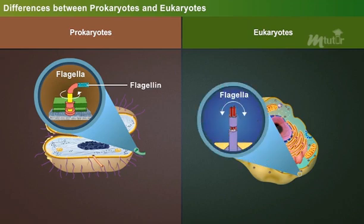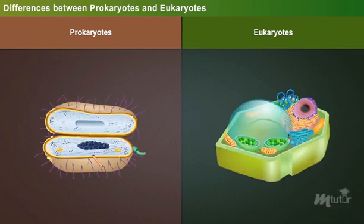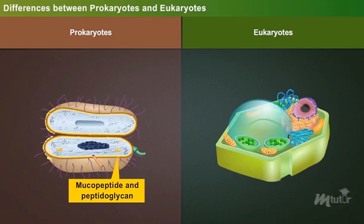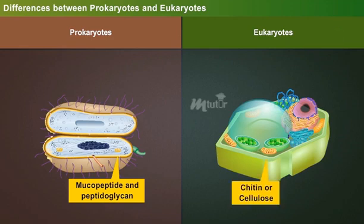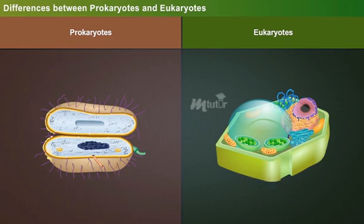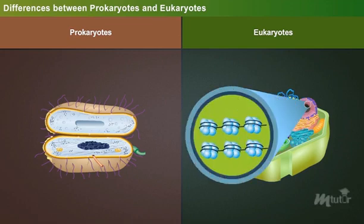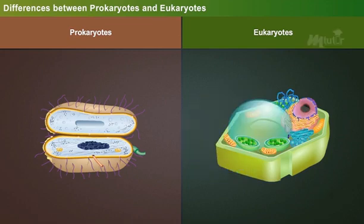Eukaryotic flagella are composed of the protein tubulin. Cell wall of prokaryotes contains mucopeptide and peptidoglycan, whereas the cell wall of eukaryotes is made up of either chitin or cellulose. Chromatin with histone is absent in prokaryotes but is present in eukaryotes.